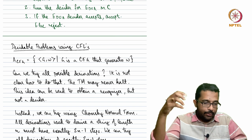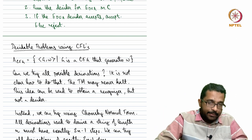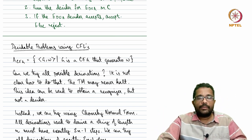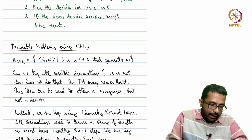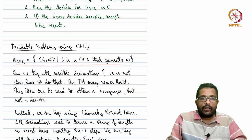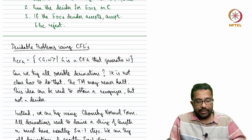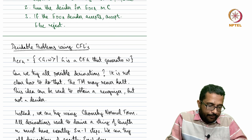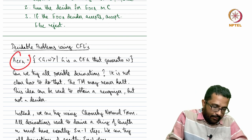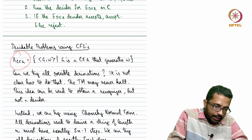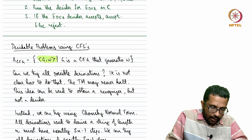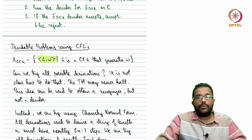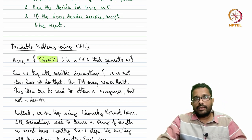Just like we saw acceptance problems of regular languages, the first thing we will see is the acceptance problem of a context-free language. We are given a context-free grammar G and a string W, and we are asked whether this context-free grammar generates the string W.